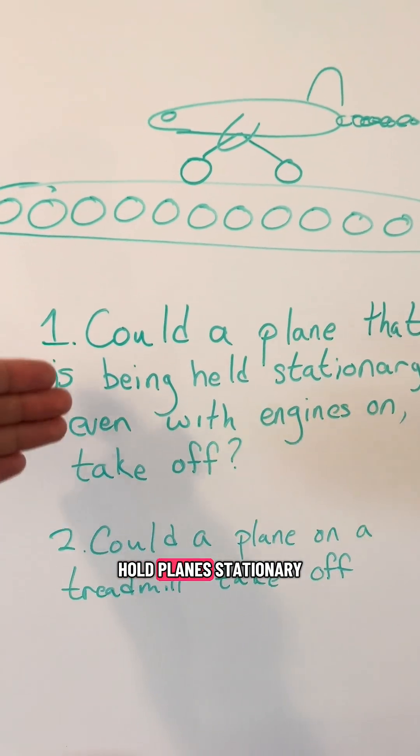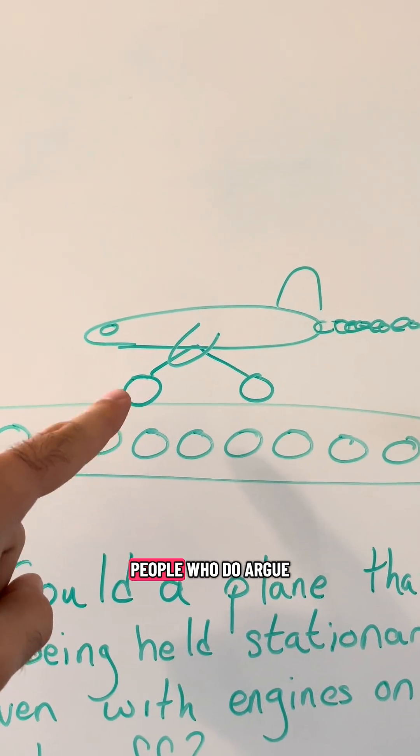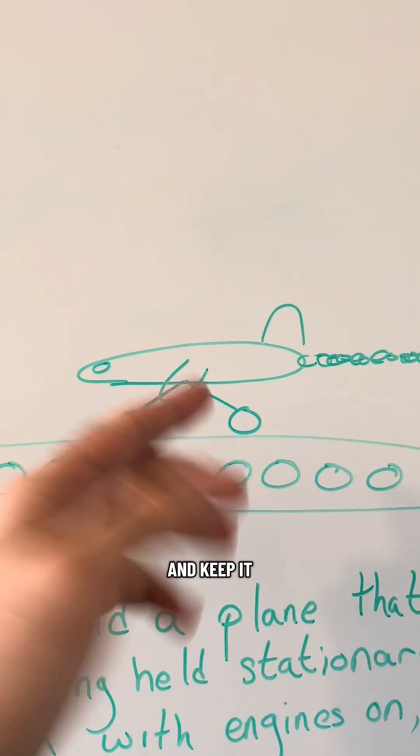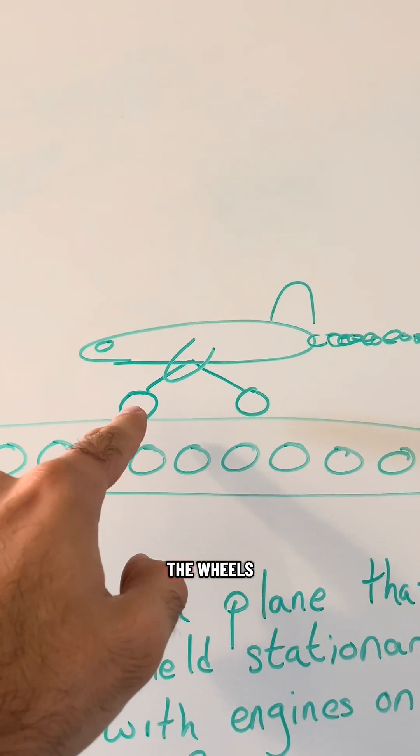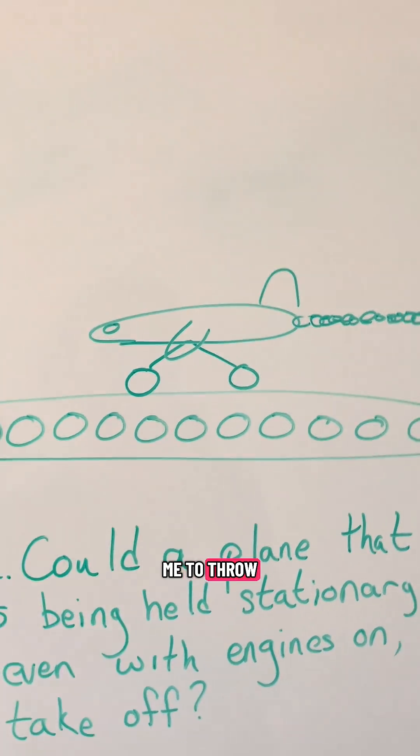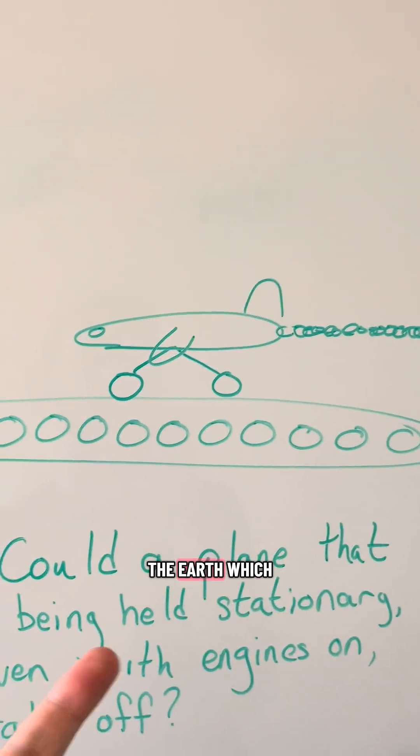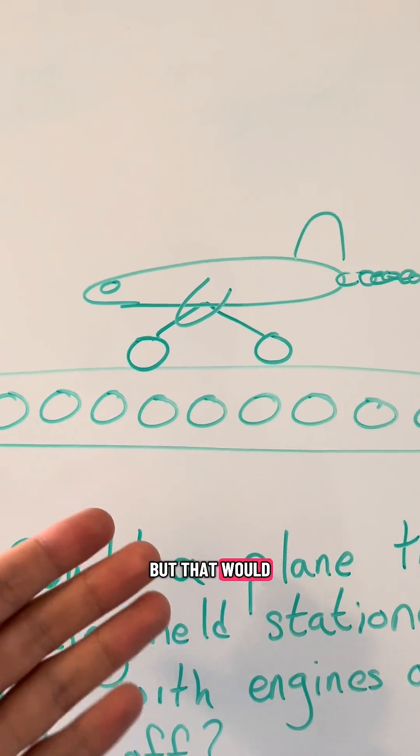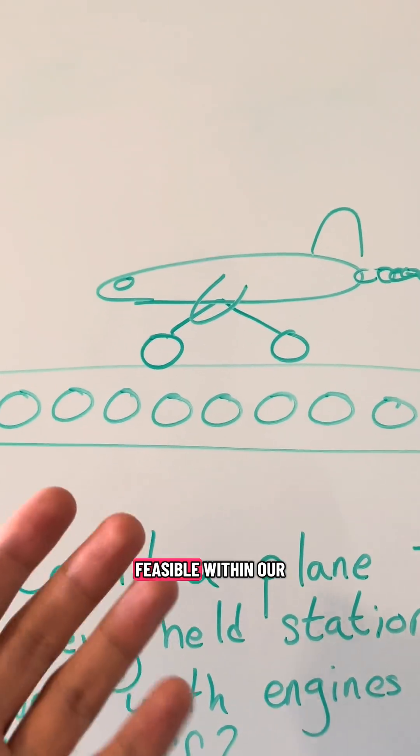Now there is a subset of people who do argue that the treadmill would be able to hold the plane from moving forward and keep it stationary because of the friction in the wheels on the axles. But that's just not reasonable. That's like saying it would be possible for me to throw a baseball so fast that it orbits the earth. I mean, in the realm of a physics problem, sure, certainly it's possible, but that would require so much force it's just not feasible within our human world.